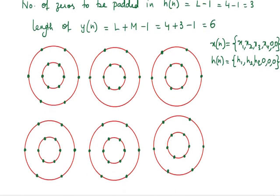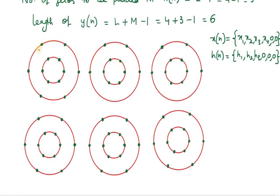After drawing these concentric circles, you position the x(n) values on the outer circle. Either h(n) can be on the outer circle or x(n) on the outer circle — it can be done either way. Start positioning elements from this position in the anticlockwise direction: x1, x2, x3, x4, then two zeros.